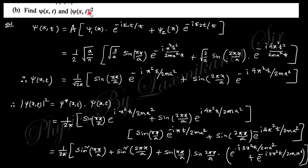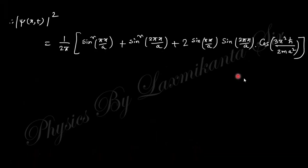Find ψ(x,t) and |ψ(x,t)|². For ψ(x,t), put in the time-dependent factors: ψ₁ e^(−iE₁t/ℏ) and ψ₂ e^(−iE₂t/ℏ). Then compute ψ*ψ by squaring and simplifying the expression to obtain |ψ(x,t)|².